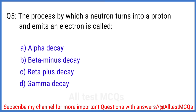Q5. The process by which a neutron turns into a proton and emits an electron is called? The right answer is option B. Beta minus decay.